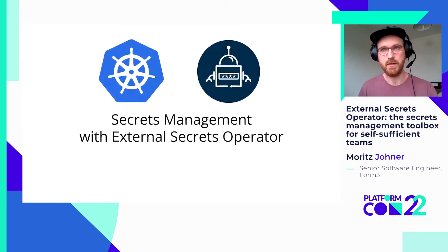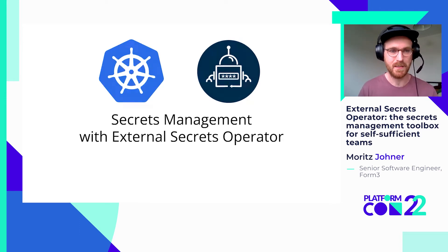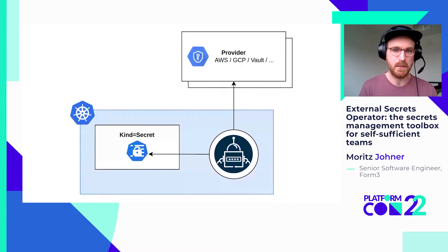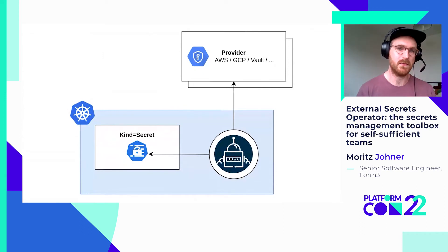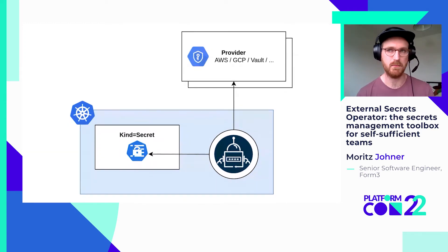Now let's switch over to how to integrate your secret management system with Kubernetes. Assuming we already have secret management sorted out, we want to integrate it with Kubernetes. ESO was specifically designed around the Kubernetes secret resource — the native way to deal with secrets. You can use secrets as an image pull secret, reference secrets from an ingress resource containing a service certificate or private key, and most importantly, mount secrets as files into a pod or consume them through environment variables from within your application container.